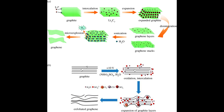Liquid phase chemical exfoliation. Similar to LPE, this method uses chemicals to exfoliate graphite into graphene flakes. Different chemicals, such as strong acids, are used to intercalate between graphite layers, facilitating exfoliation.